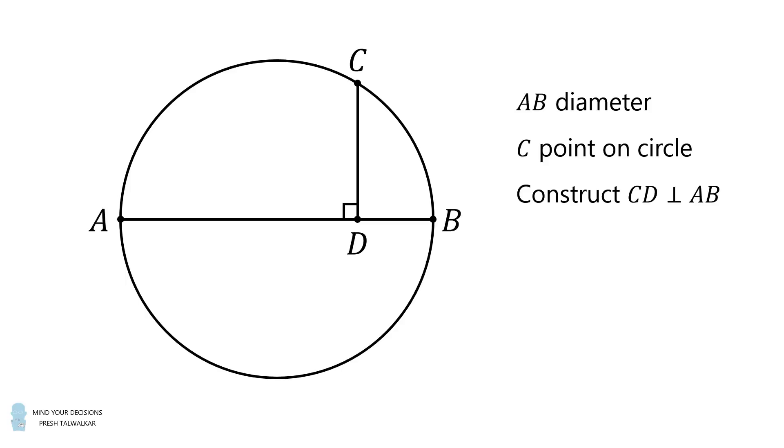You are given a circle and a diameter AB of the circle. You are also given a point C that's on the circle. The challenge is to construct CD that's perpendicular to AB. But there's a challenging part of this puzzle. You are only allowed to use a straight edge as the tool. You are not allowed to use a compass.